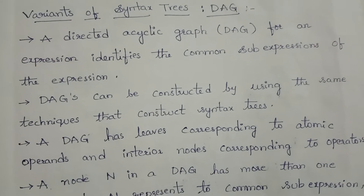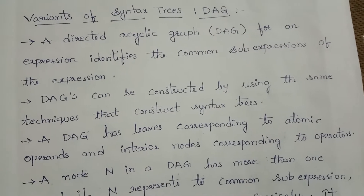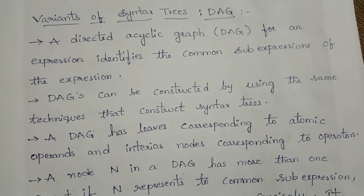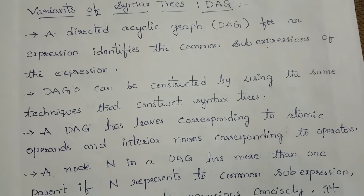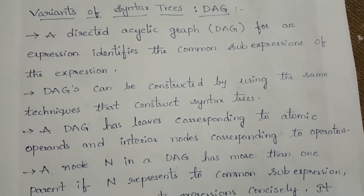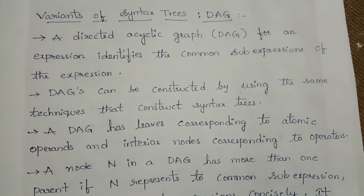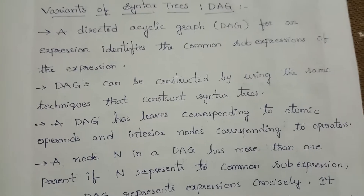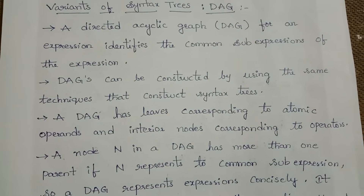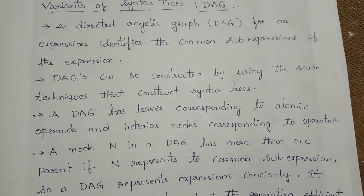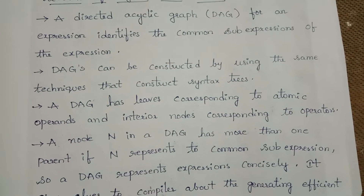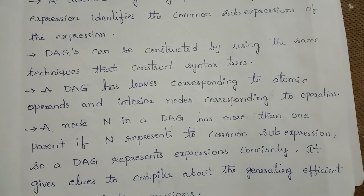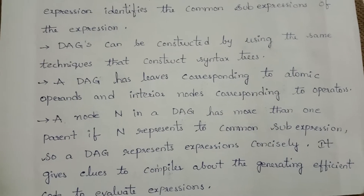A directed acyclic graph (DAG) for an expression identifies the common sub-expressions of the expression. Directed acyclic graphs can be constructed using the same techniques that construct the syntax tree. A DAG has leaves corresponding to atomic operands and interior nodes corresponding to operators. A node N in a directed acyclic graph may have more than one parent.